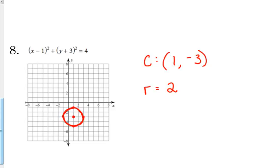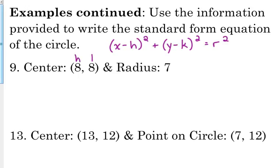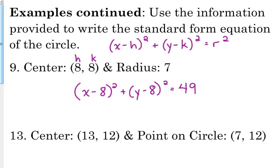So let's just practice with that. Given the equation, they ask us to graph it, or they may give us a different set of information. The key remains the same: you've got to know where the center is and you've got to know what the radius is. Number nine is really simple — the center is (8, 8) and the radius is seven. All we have to do is plug that into our standard form equation: x minus h squared plus y minus k squared equals r squared. So the equation is x minus 8 squared plus y minus 8 squared equals 7 squared, which is 49.